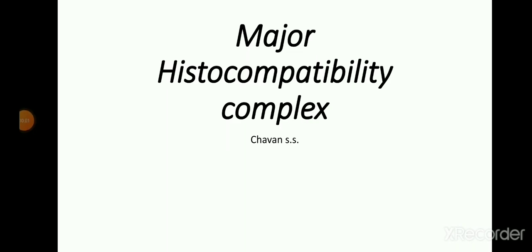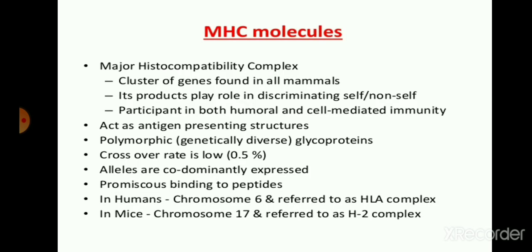Hello students. Today we talk about the major histocompatibility complex from your immunology chapter number 4. Basically, the major histocompatibility complex is a type of molecule which is present on the cell receptor. These molecules are transcribed by the clusters of genes found in all mammals, and these MHC molecules are essential for the discrimination of self and non-self molecules.